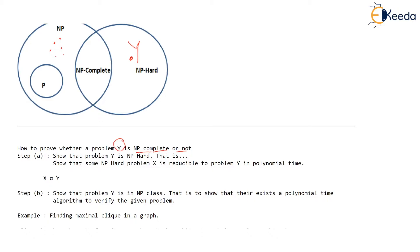What you can do instead is take some existing NP-hard problem. If you know some problem X which is already NP-hard, you can show that X can be reduced to Y. If X can be reduced to Y, and X is NP-hard, then Y has to be NP-hard because Y is as hard as X. So to prove Y is NP-hard, you show that X is reducible to Y in polynomial time. This reduction should be done in polynomial time. Then if X is NP-hard, surely Y is NP-hard. This is the first step.